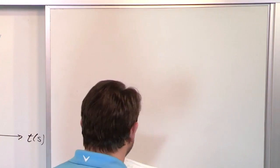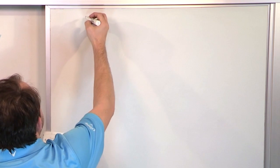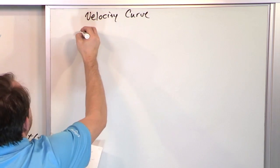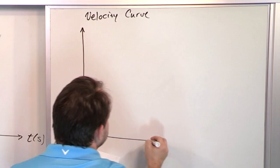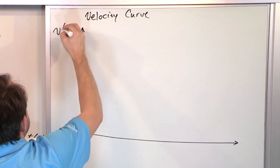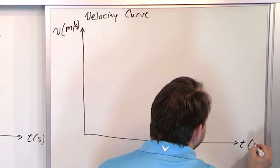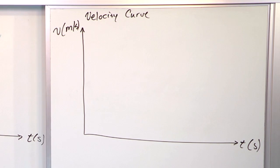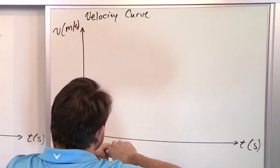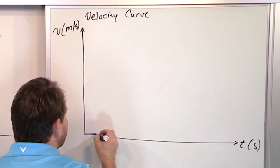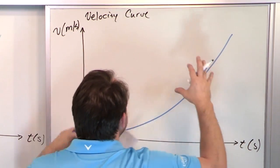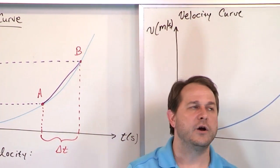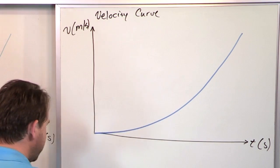Why did I spend several minutes going over something you already know? It's because it's a direct mirror when we look at the velocity curve. I'm going to do the exact same sort of argument. Here is a curve, but it's not position — it's velocity. So this is going to be meters per second, still versus time. We always plot things versus time because in the real world everything changes with time. I'm going to draw a completely new velocity curve.